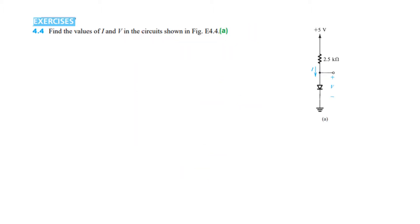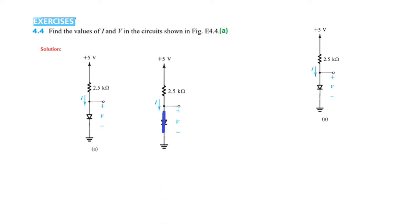Let's start the first question, part A: find the value of I and V for the given circuit. First of all we see that the cathode is connected to ground, and the anode is connected to the positive side. Therefore this diode will be conducting, and so we draw the equivalent circuit like this — the diode is now shorted.